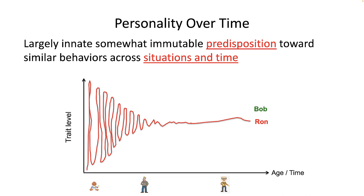If we get half of our genes from one parent and the other half from the other parent, we can see why our personalities are not unlike those of our parents. If we place time or age on the horizontal axis and the so-called trait level on the vertical axis, we can graph the relationship between age and trait.